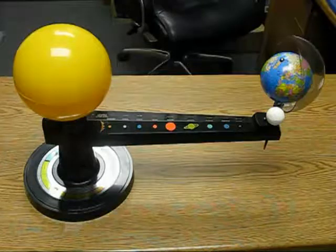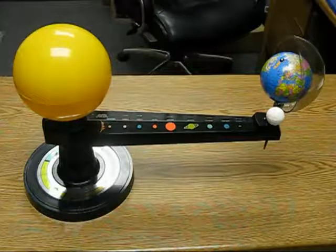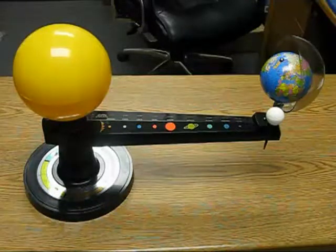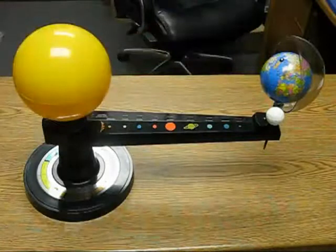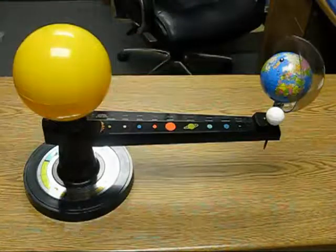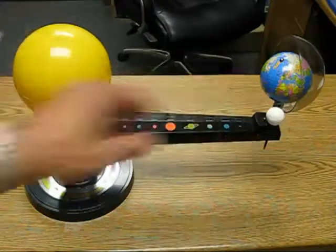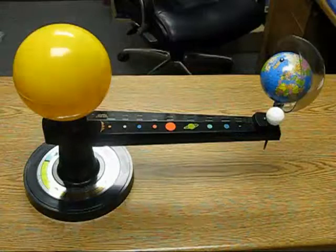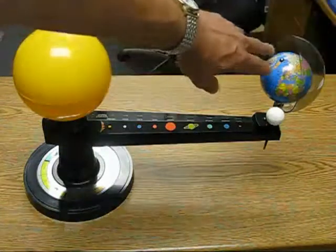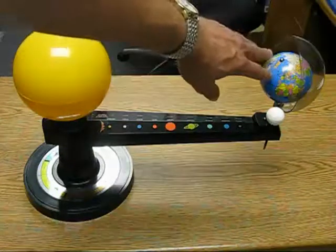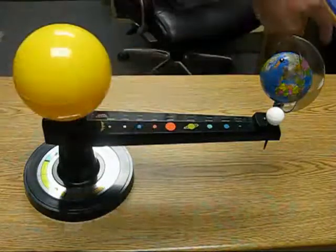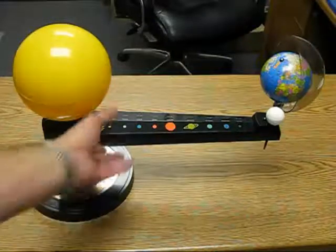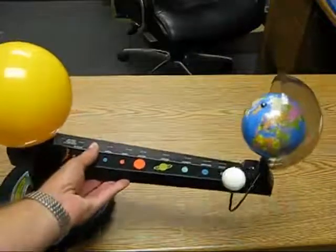Now there are four main parts to the orbiter. The first one is the Sun, the Earth, the Moon, and the Shadow. Now the Shadow represents night. As you can see, the side of the Earth facing the Sun would be lit up. The side opposite the Sun would be dark. And that's what the shadow represents. I'll move this in so you can get a closer look at it.